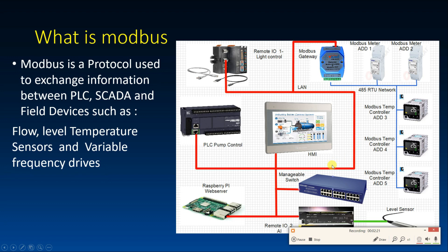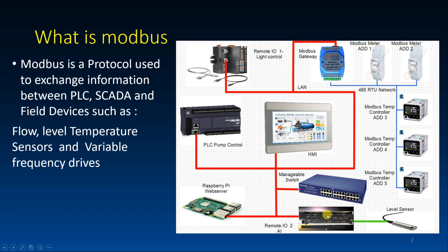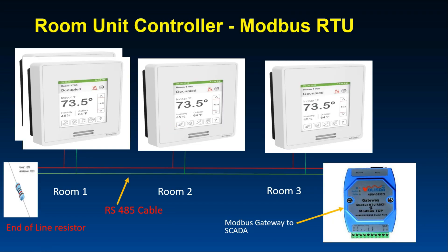This is a setup of a Modbus network. Here we have the LAN and the Modbus RTU, along with remote data acquisition modules for level monitoring. For example, in a hotel with several air conditioners, from a main computer we can control each one by assigning addresses — room 1 gets address 1, room 2 gets address 2, and so on. The two communication lines, wires A and B, connect all devices in parallel and then run to a Modbus gateway.